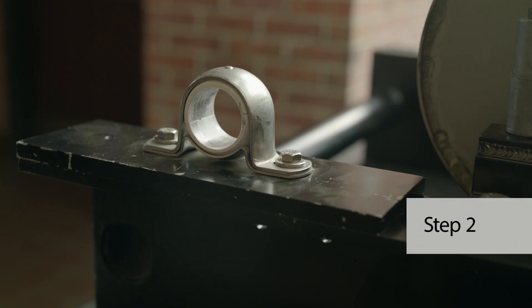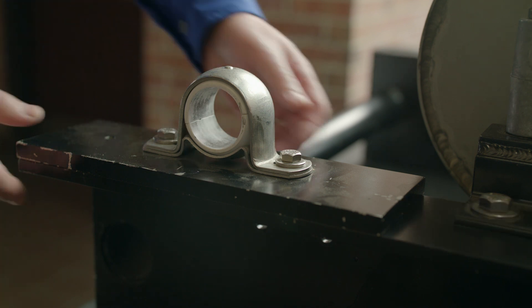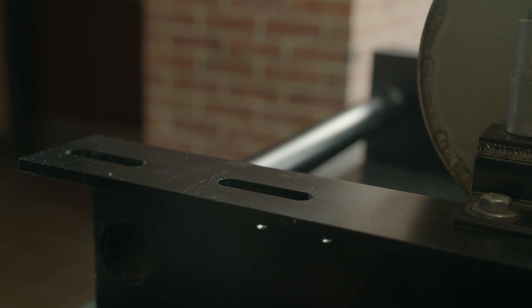Step two, check for possible interferences that might not be noted on the installation drawing. You're looking for anything that will interfere with placement of the brackets, bearing clamps, or the Verilite itself. Remove any interferences, then proceed.